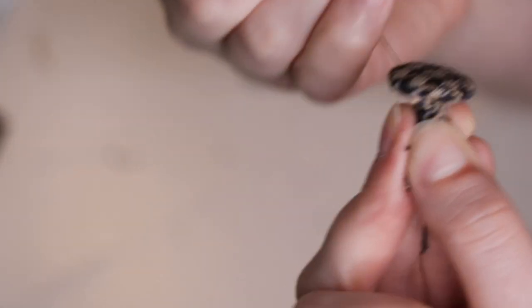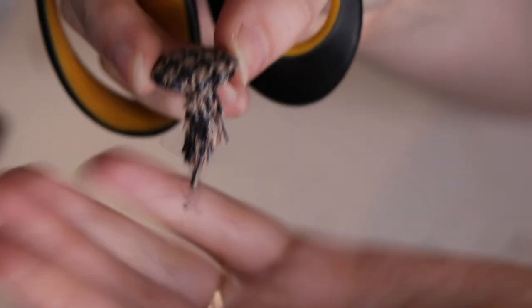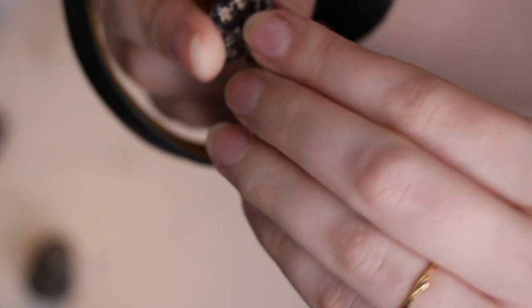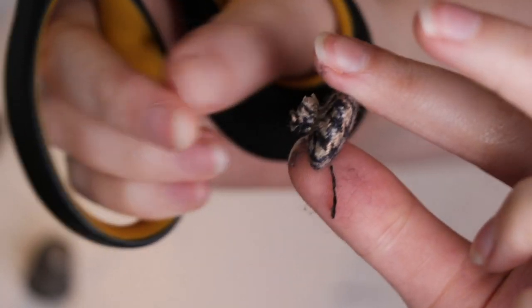When it starts getting difficult, use your thimble, push the needle through and then when you feel good, you can snip off the thread and then you'll have this jellyfish looking thing. And just cut off the excess leaving a little bit and there's your shank and your lovely covered button.